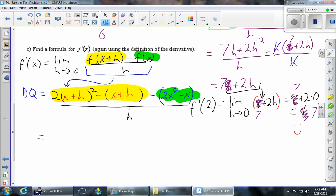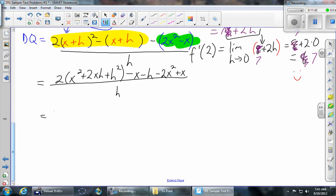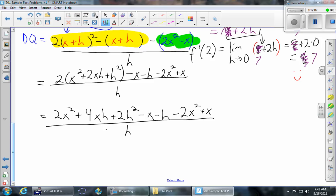So some algebra to do. First thing we'll do is FOIL. So we get 2(x² + 2xh + h²) minus, then we'll distribute that minus sign. -x - h, we'll distribute this minus sign. -2x² + x, divided by h. And now we'll distribute this 2. And then, like before, anything that was just a number in the previous part of this problem canceled. So here's the more general thing. Anything that doesn't have h in it needs to cancel. So there's a 2x². There's a -2x². There's a -x. There's a +x.